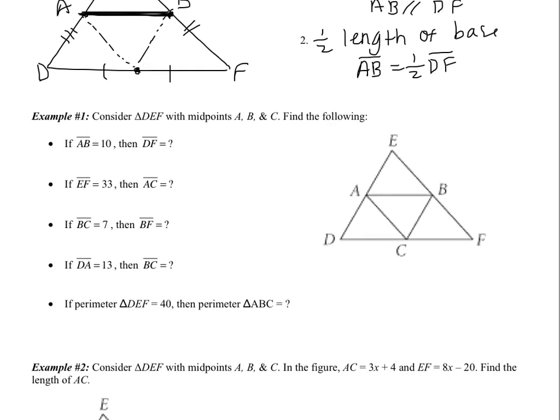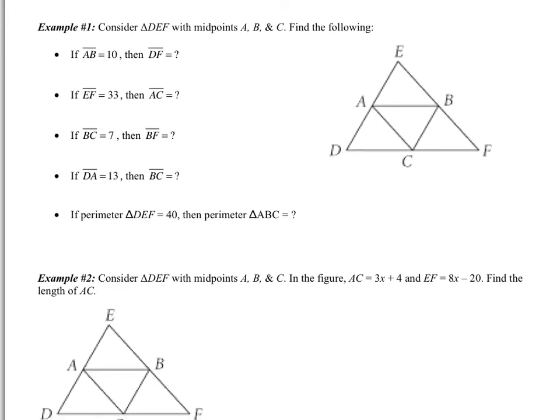So let's look at example 1. If AB is 10, what's DF? Well, AB is half of whatever DF is. DF is going to be bigger, so if I multiply 10 by 2, I get 20. Now if EF is 33, find AC. The midsegment is half of the base, so I'm going to take half of 33, which is 33 over 2, or 16.5.